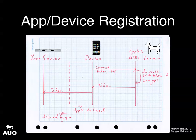Before any notifications happen, when the device first turns on or gets network access, it makes a connection in the background to Apple's APNS server. It says, essentially, here's a token I just made up and here's my device identifier — it's actually a certificate but pretend it's an identifier. Apple does some stuff with that, saves it, encrypts it, and sends back another token based on this information — some random string.